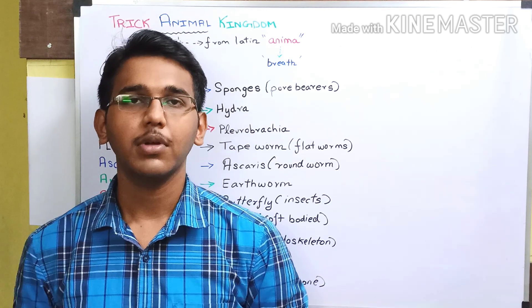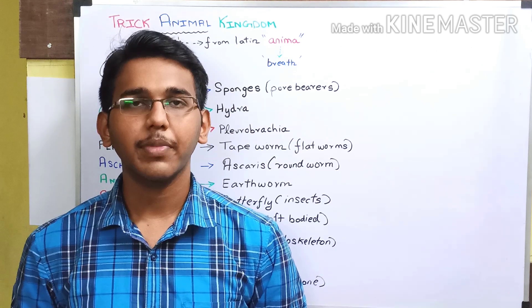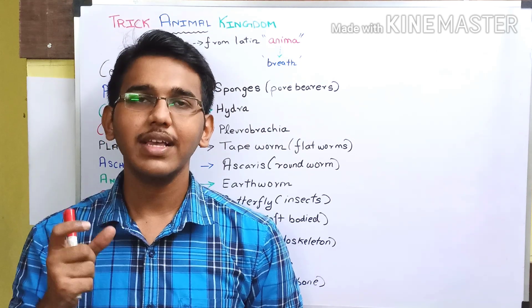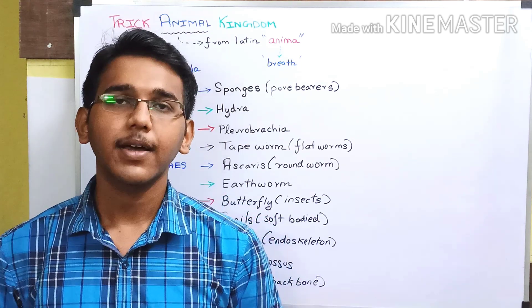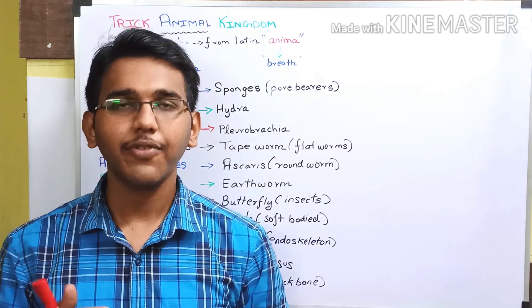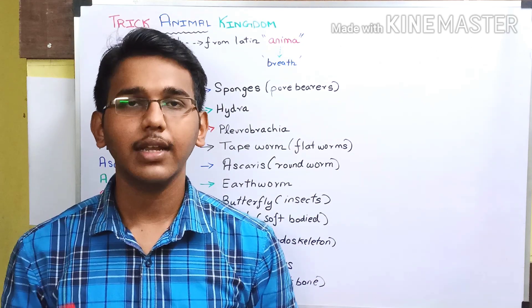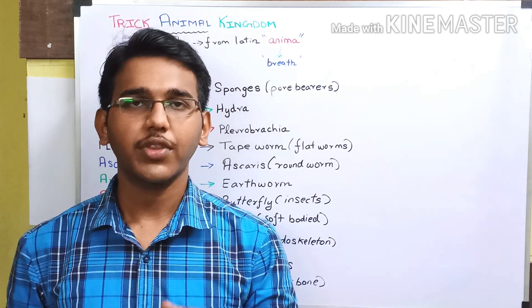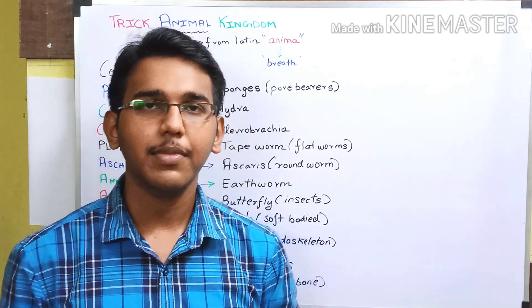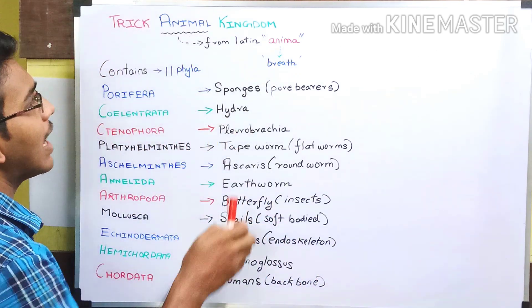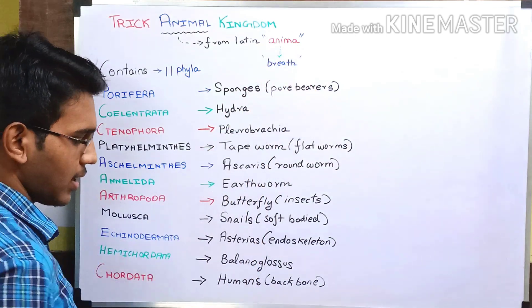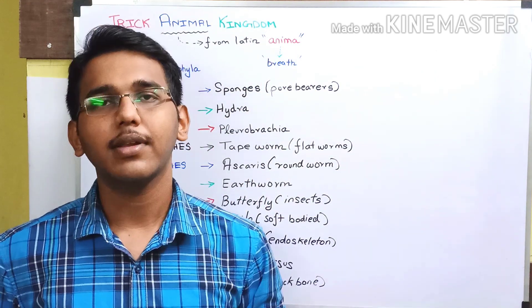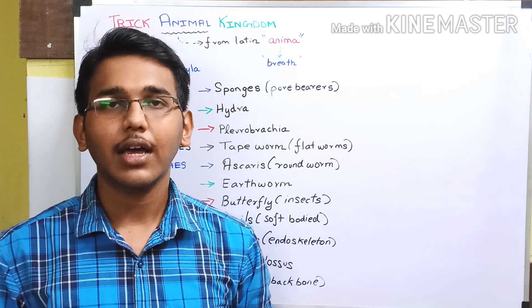Before moving into the main concept of the video, we must know some basic information about the animal kingdom and the 11 phylums present inside it. First, let us discuss the origin of the word 'animal.' The word animal is derived from the Latin word 'anima,' which means 'breathe.'